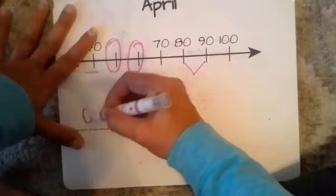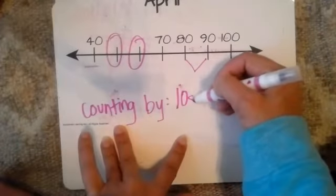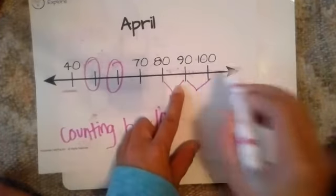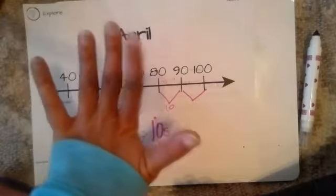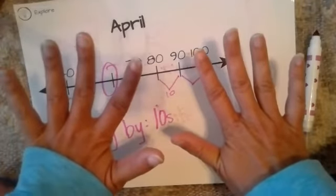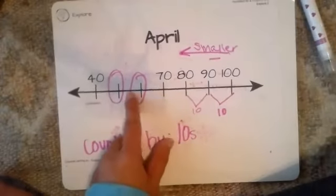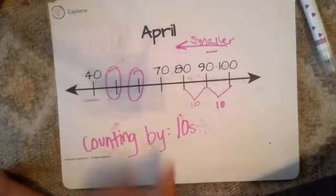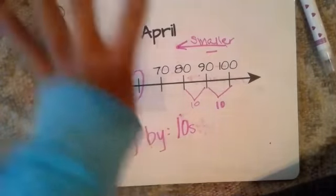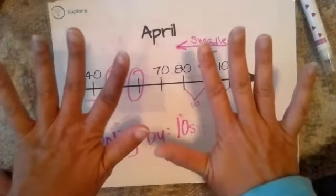It looks like I might be counting by tens — remember to include this on your number lines. Let's see if that pattern holds between 90 and 100: 91, 92, 93, 94, 95, 96, 97, 98, 99, 100 — it follows that same pattern of 10. So because we're going to the left, we're going to get smaller, which means we subtract or count backwards. Let's find the first missing number: counting back from 70 — 69, 68, 67, 66, 65, 64, 63, 62, 61, 60.